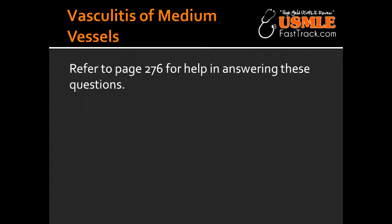Kawasaki's disease most commonly happens in Asian children under the age of 4. What are some of the signs and symptoms of Kawasaki disease? Signs and symptoms include fever, cervical lymphadenitis, conjunctivitis, changes in the lip and oral mucosa leading to a strawberry tongue, hand and foot erythema, as well as a desquamating rash.